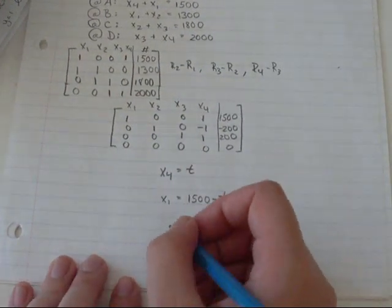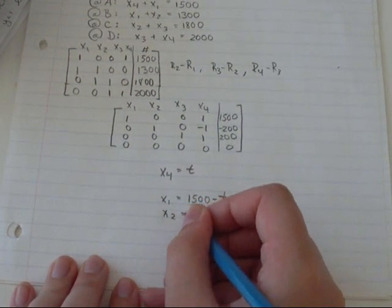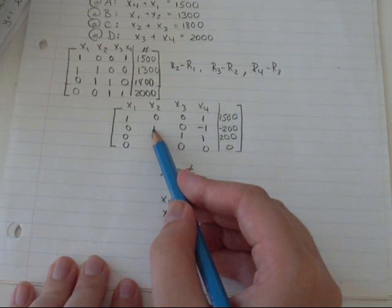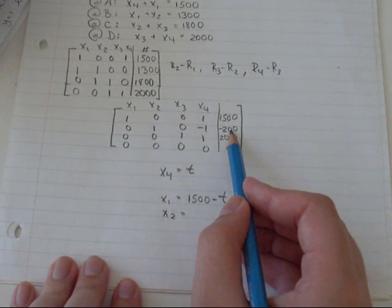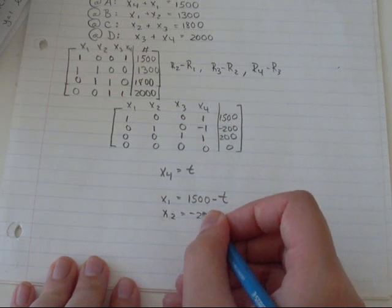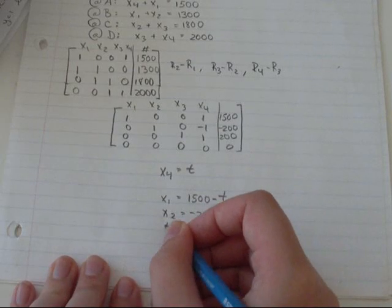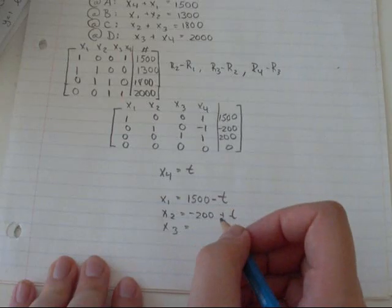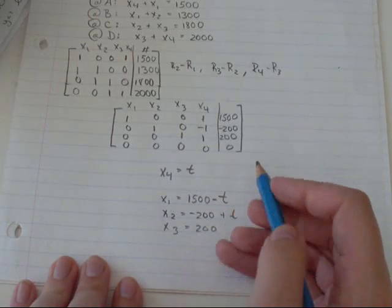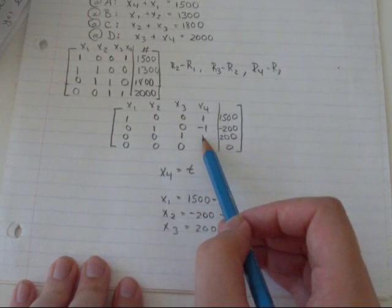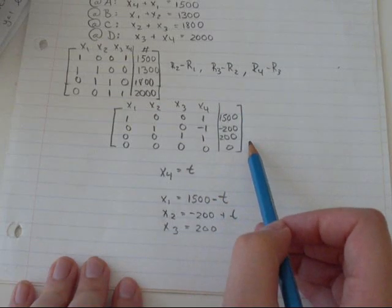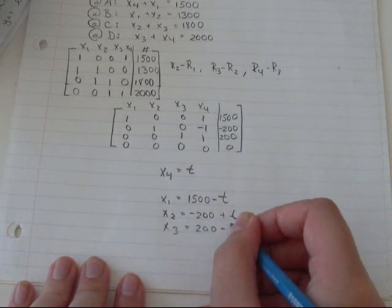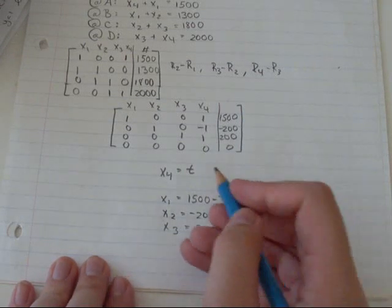And then I've got x2 here equals negative 200 plus t. And then x3 turns out to be 200. This is plus x4, so I'll take it to the other side. Minus x4, and x4 is t, so minus t.